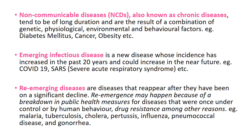Another example of a re-emerging disease is measles. In some places, there were zero cases for many years and then measles suddenly reappeared. As a response, the practice of giving only one measles vaccine in a lifetime was changed to two doses, so that immunity is maintained even in older generations.